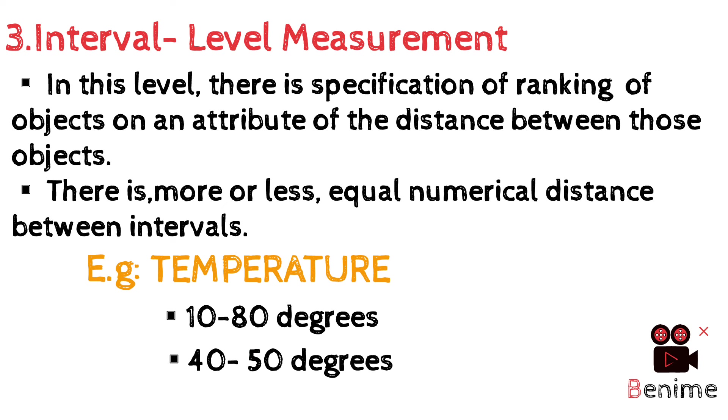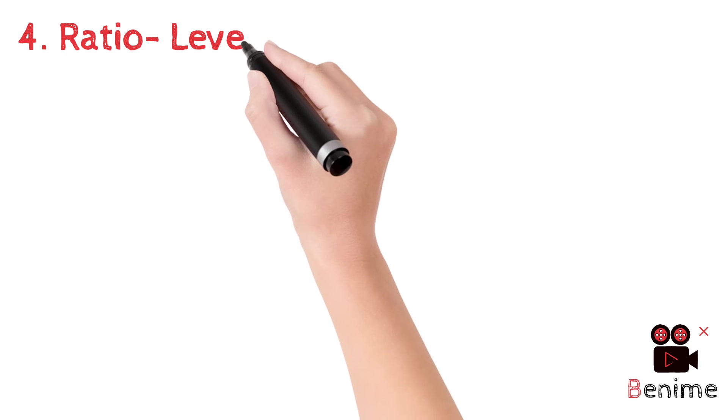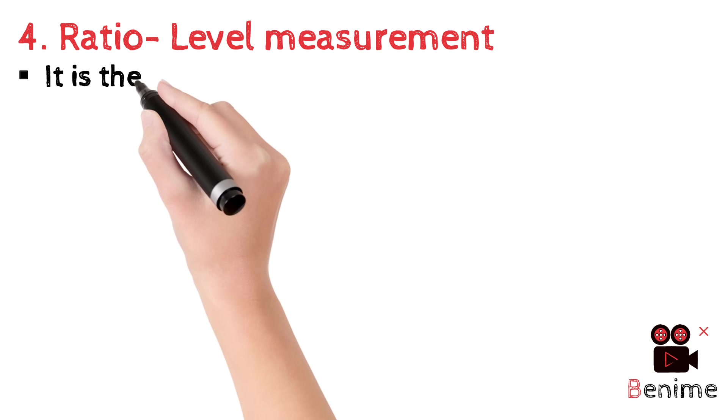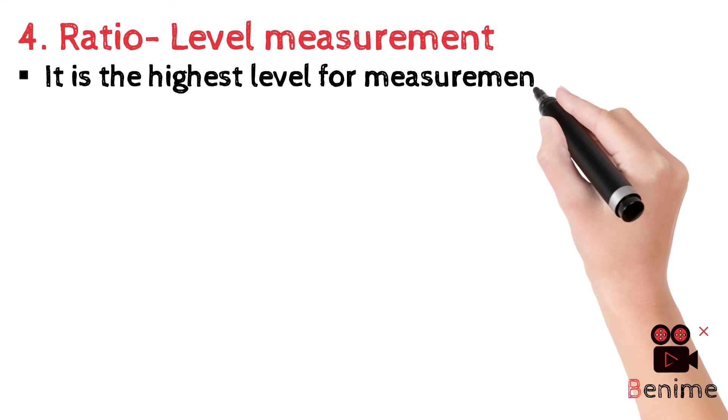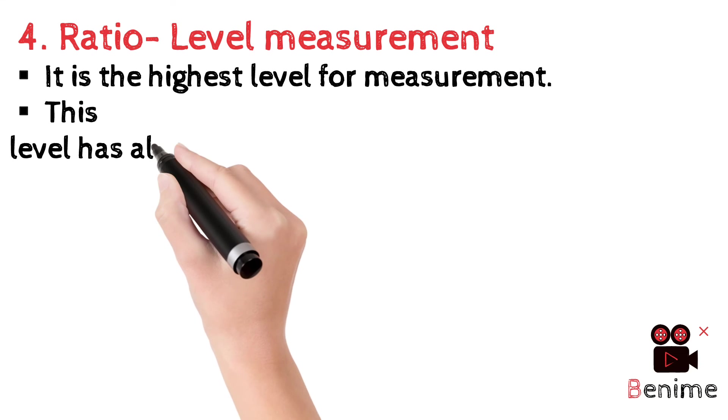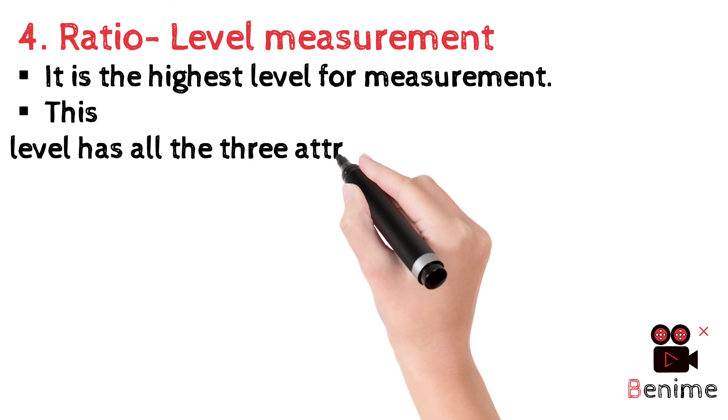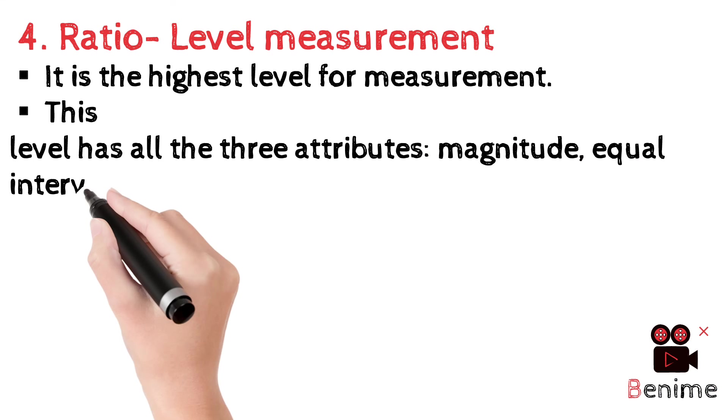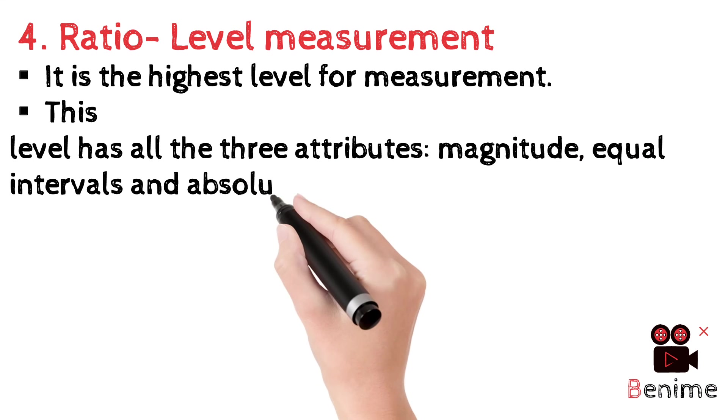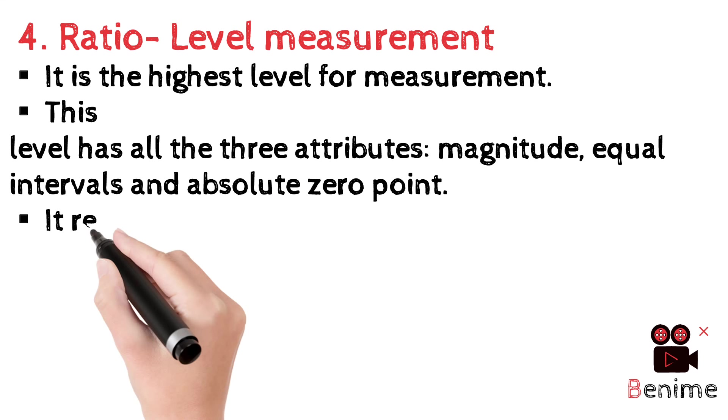Next we move on to ratio level measurement. It is the highest of all measurements. It has all three attributes: magnitude, equal intervals and absolute zero point. Magnitude is nothing but size, large or small.